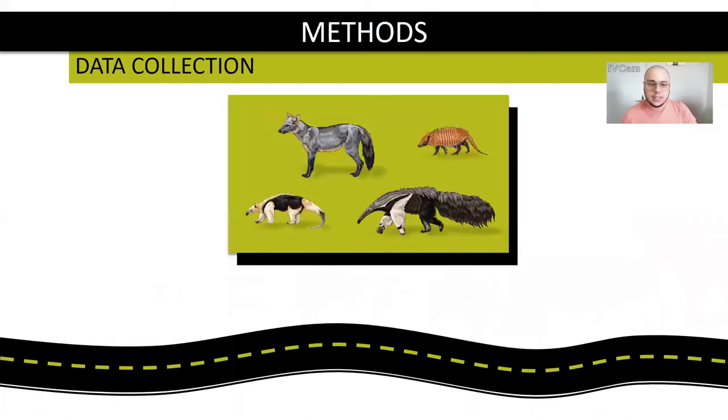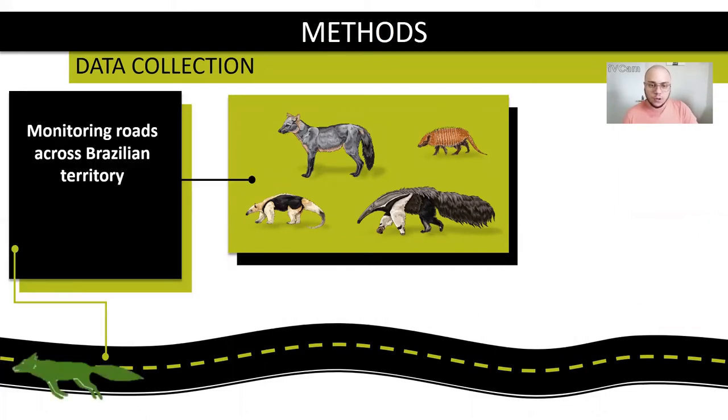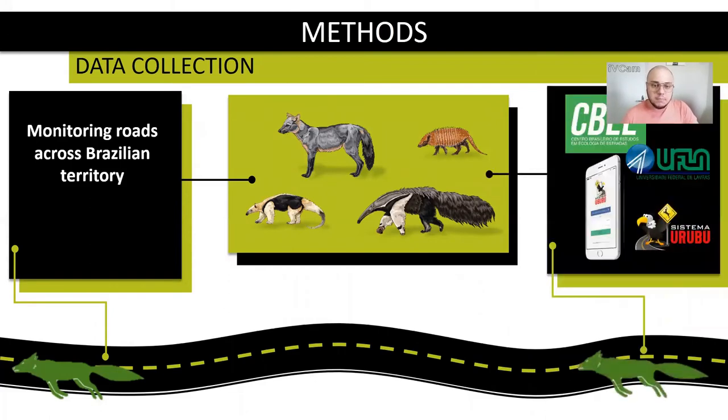For this work, research by roadkill took the four species from two main data sources: one monitoring roads across the Brazilian territory provided by our collaborators, and other mainly from citizen science through the Urubu app from the Brazilian Center of Road Ecology of Federal University of Lavras.